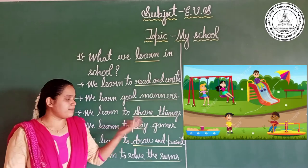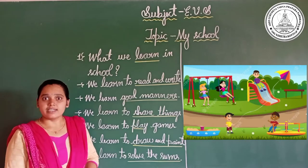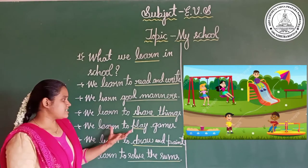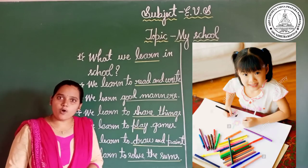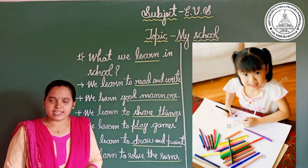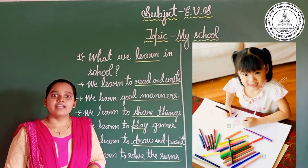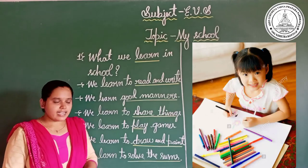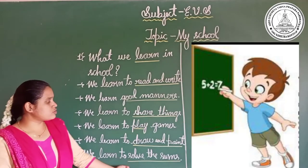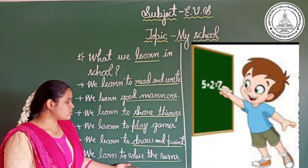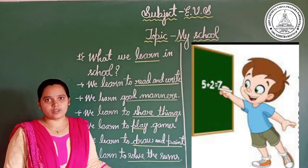We learn to play games. In the playground, Alok and his friends play games, and you also play games with your friends in school. We also learn to draw and paint. In the drawing period, we can learn new types of drawing and colorfully paint them. And in the math class, we learn how to solve the sums.